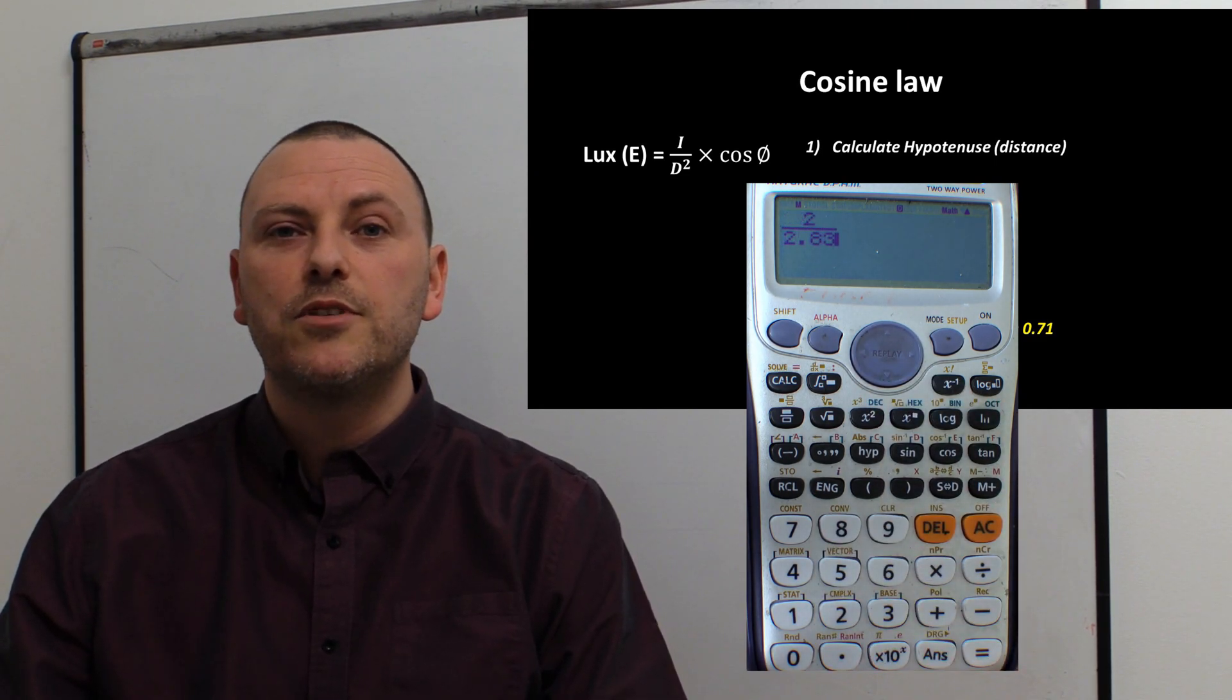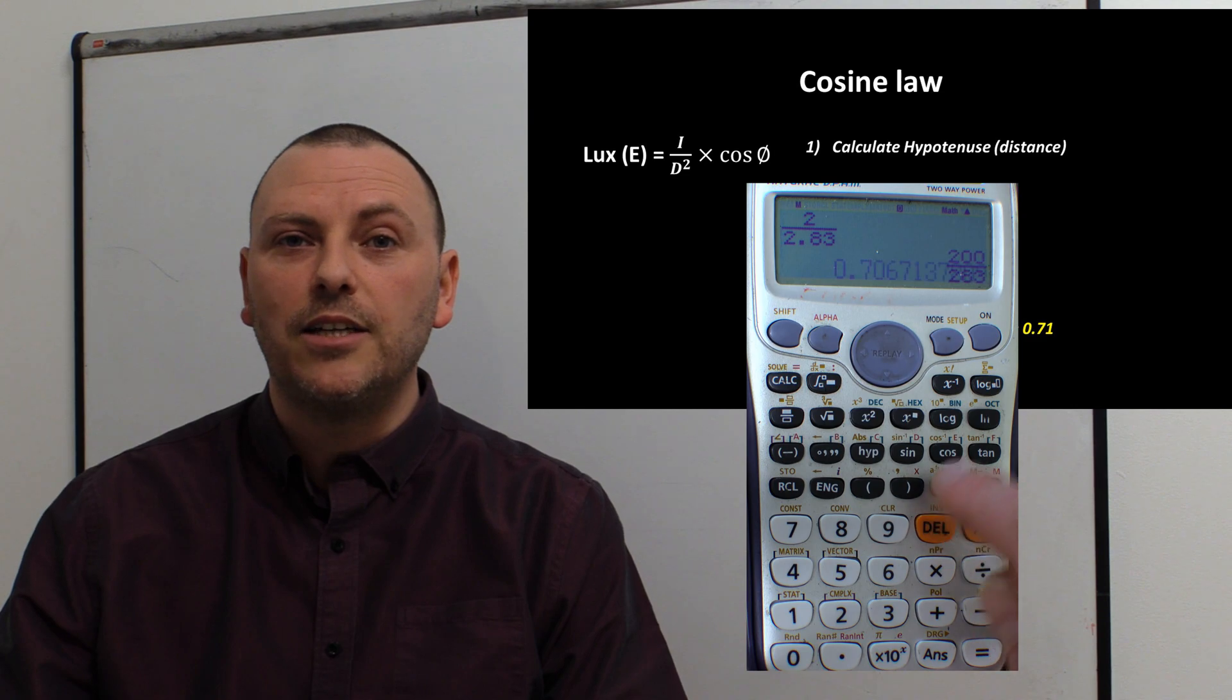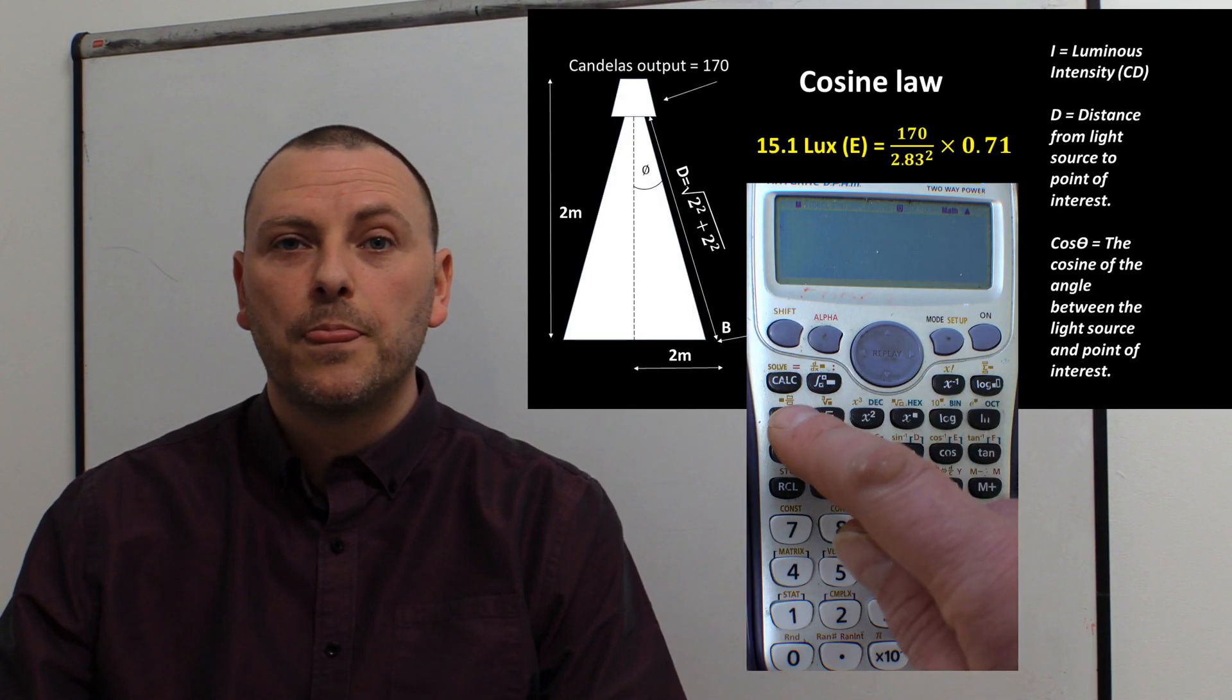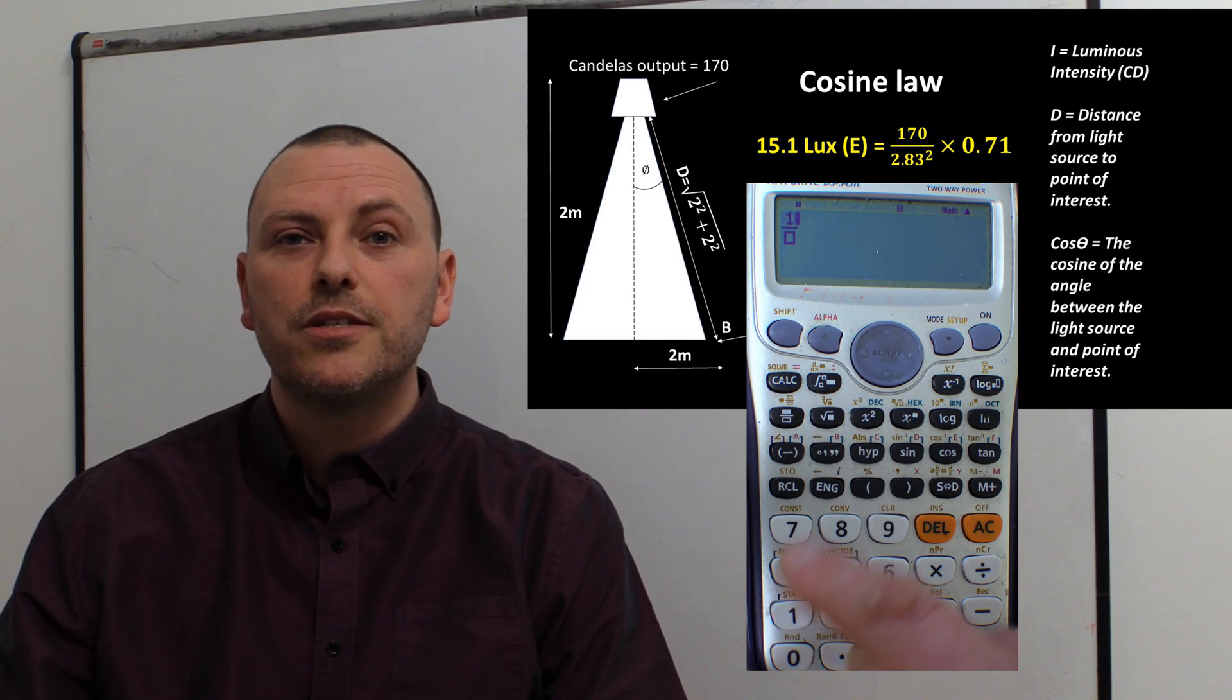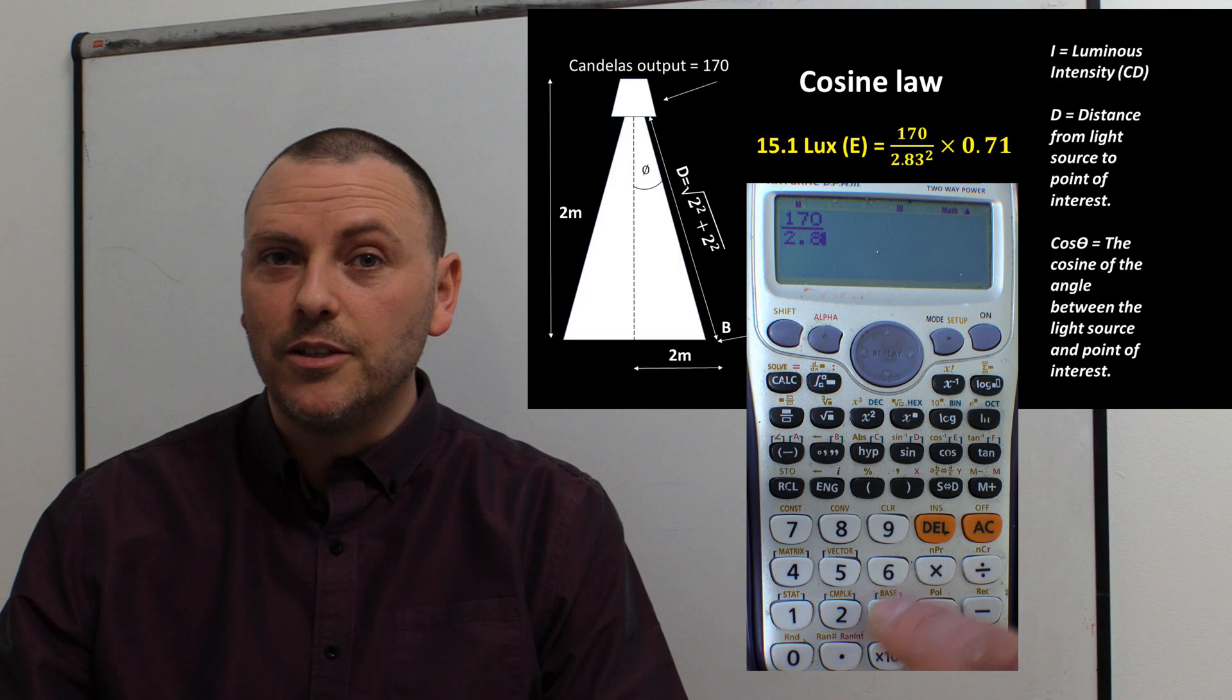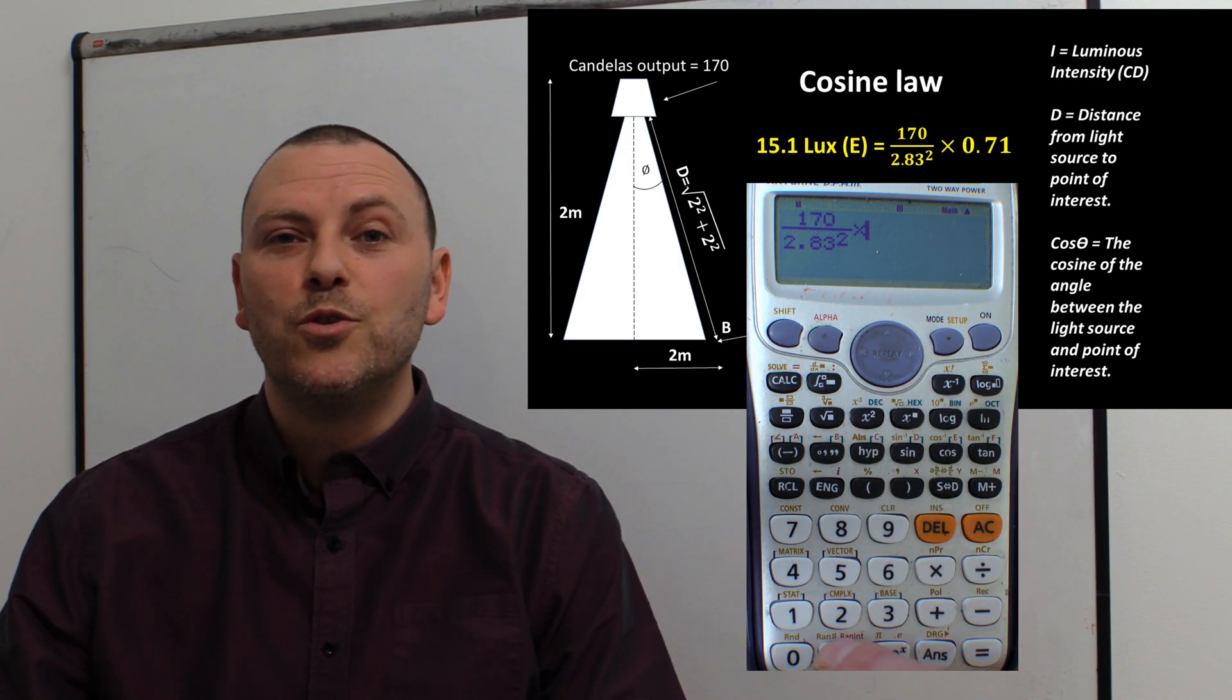The third step is simply putting all that together into the equation. It'll be 170 divided by our d value, which is the slopey side value 2.83 squared, and then we times that by our cosine theta, which is 0.71.